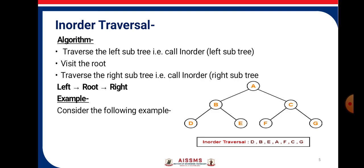Now when we consider this example, we will first move on to the left part of the tree. In the left part we get D, then we will traverse the root that is B, then we will traverse the right that is E. Then again we will move up to the root that is A. Coming to the right part, we will traverse the left part of it that is F, then root C, then G. So the in-order traversal that we get is D, B, E, A, F, C, G.